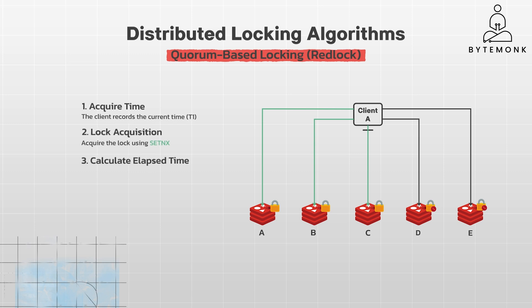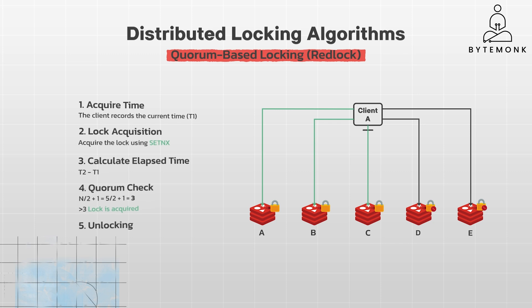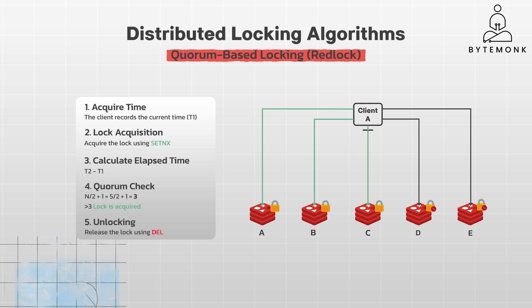The client calculates the time elapsed since step 1, for example T2 minus T1. Then it does a quorum check: if the client has acquired the lock on a majority of instances — at least 3 out of 5 in our example — and the elapsed time is less than the lock validity time, the lock is considered acquired. Otherwise, the lock is not acquired. If the lock was acquired, the client must release the lock on all Redis instances using the DEL command.